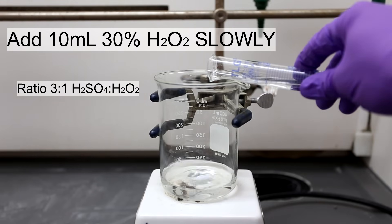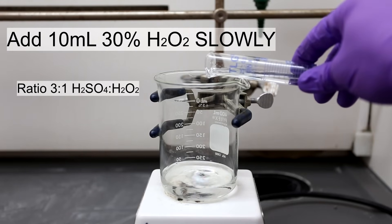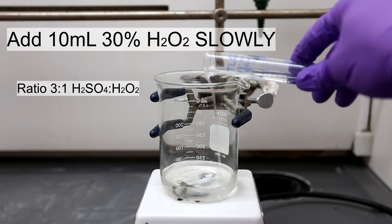Next, with strong stirring, 10 milliliters of 30% hydrogen peroxide was added very slowly.